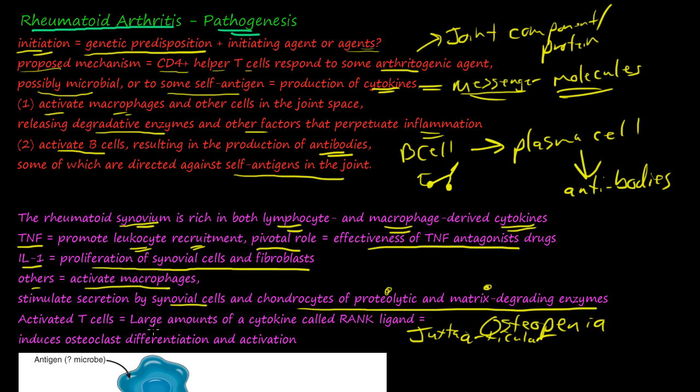The activated T cells secrete a large amount of the cytokine called RANK, R-A-N-K. What that RANK does is induces osteoclast differentiation and activation. This could be another factor into this osteopenia degradation of the bone that we see in the x-rays.